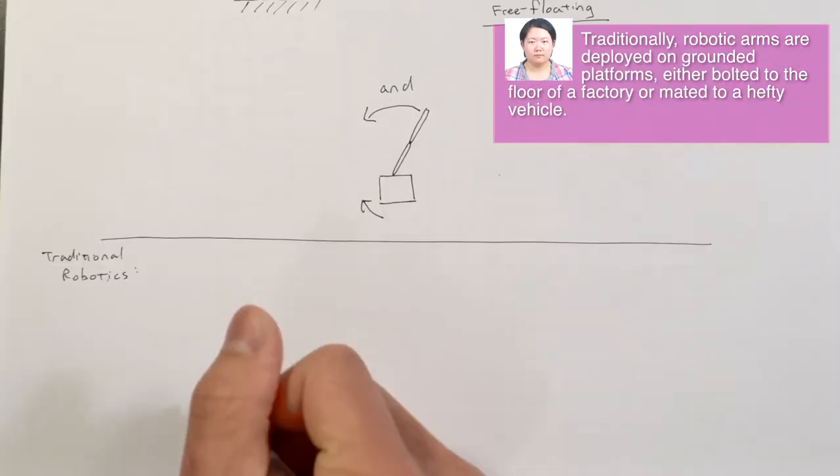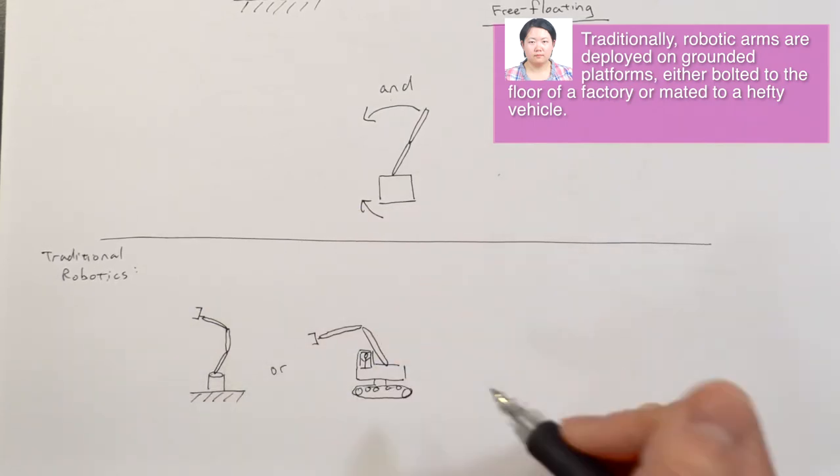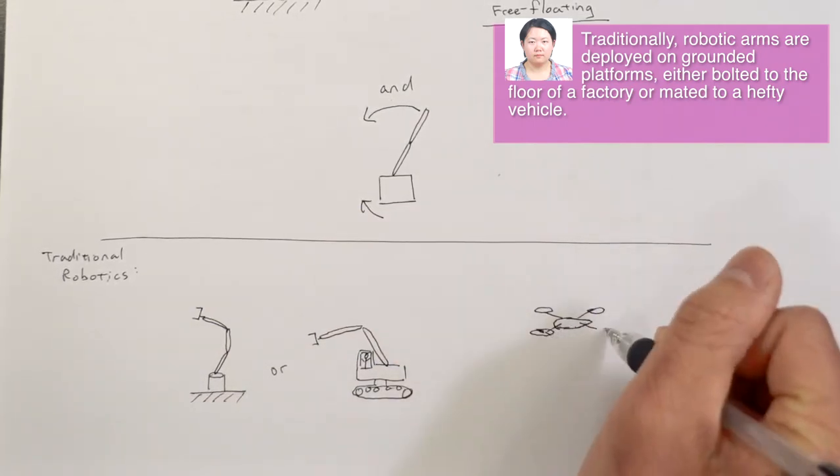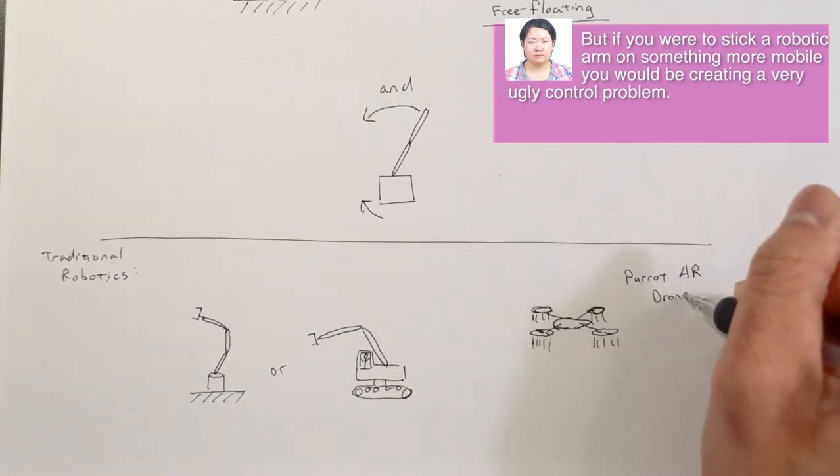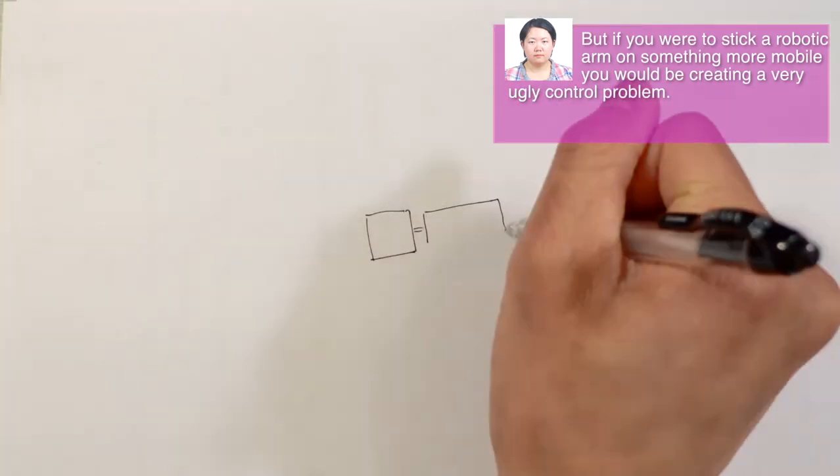Typically, robotic arms are deployed on a grounded fixed platform, either bolted to the floor of a factory or mounted to a heavy vehicle. But if you were to put a robotic arm on something more mobile, you would be creating a very ugly control problem.